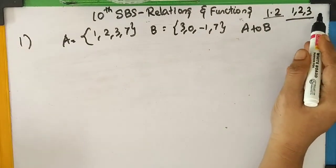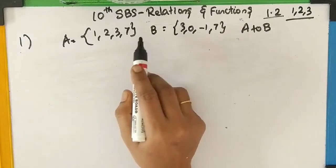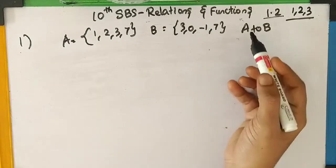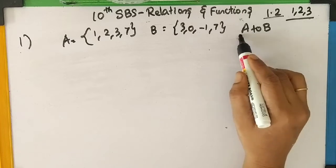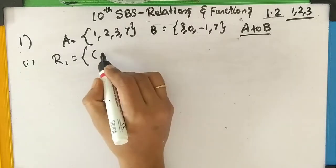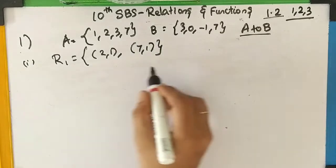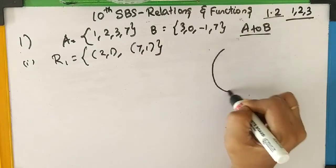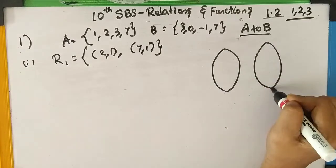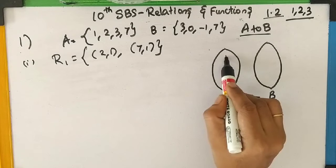Let's see the first, second and third problems in Exercise 1.2. The first problem: A is equal to {1, 2, 3, 7} and B is equal to {3, 0, -1, 7}. We have to check whether the relations are possible or not. Let me draw set A and set B — the first circle is set A and the second circle is set B. The relation is from A to B. In set A: 1, 2, 3, 7, and in set B: 3, 0, -1, 7.